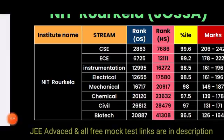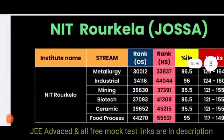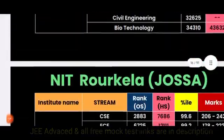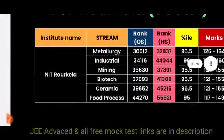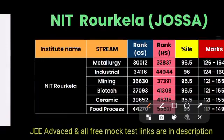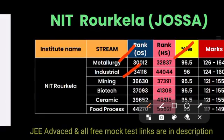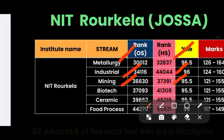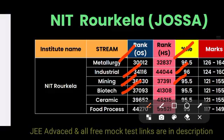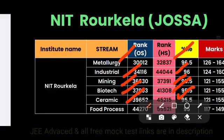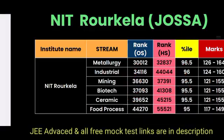For NIT Roorkee through JOSA, there are a few more branches. Metallurgy is 30,000 for other state and 32,000 for home state. Industrial is 34,000 for other state and 44,000 for home state. Mining is 36,000 for other state and 37,000 for home state. Biotech is 37,000 for other state and 41,000 for home state. Ceramic is 49,000 for other state and 45,000 for home state. Food Processing is 44,000 for other state and 55,000 for home state.